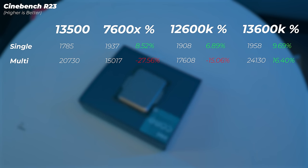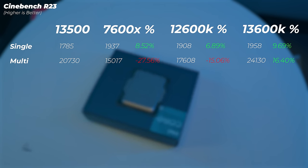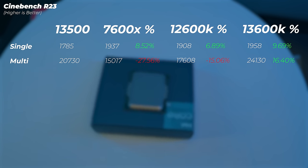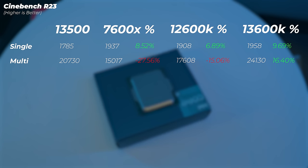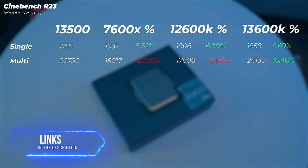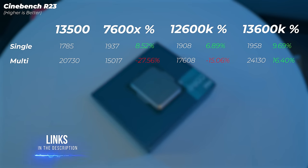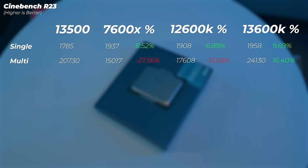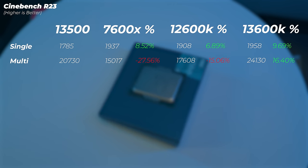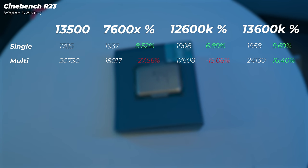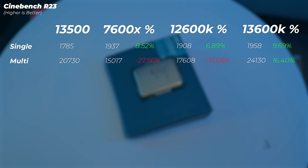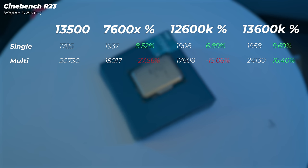In Cinebench R23, the 7600X is 8.5% faster in single-core — thanks to its 5.3 GHz clock vs. 4.8 GHz — but 27.5% slower in multi-core. The 12600K is about 7% faster in single-core but 15% slower in multi-core. The 13600K is about 10% faster in single-core and 16% faster in multi-core. So those four extra watts on the 13600K translate into significantly higher clock speeds and better performance.